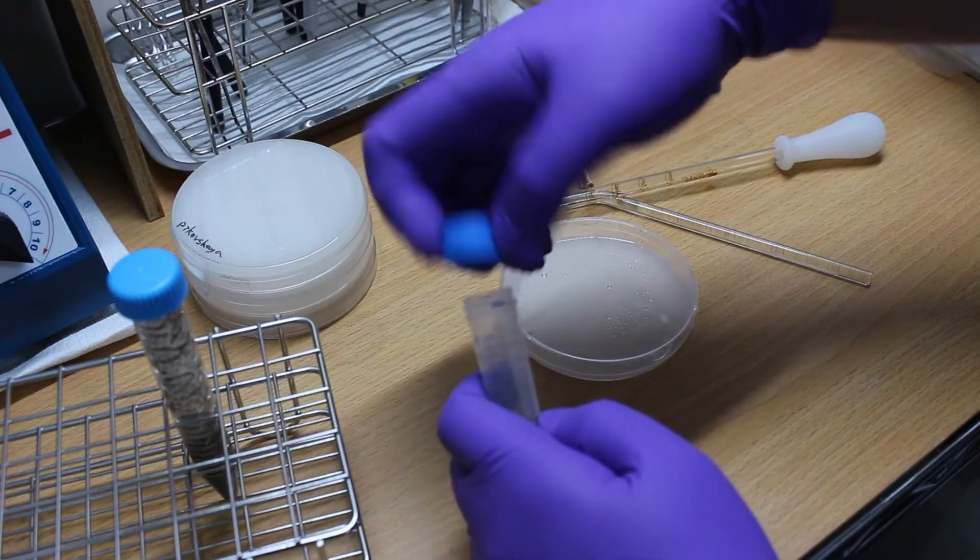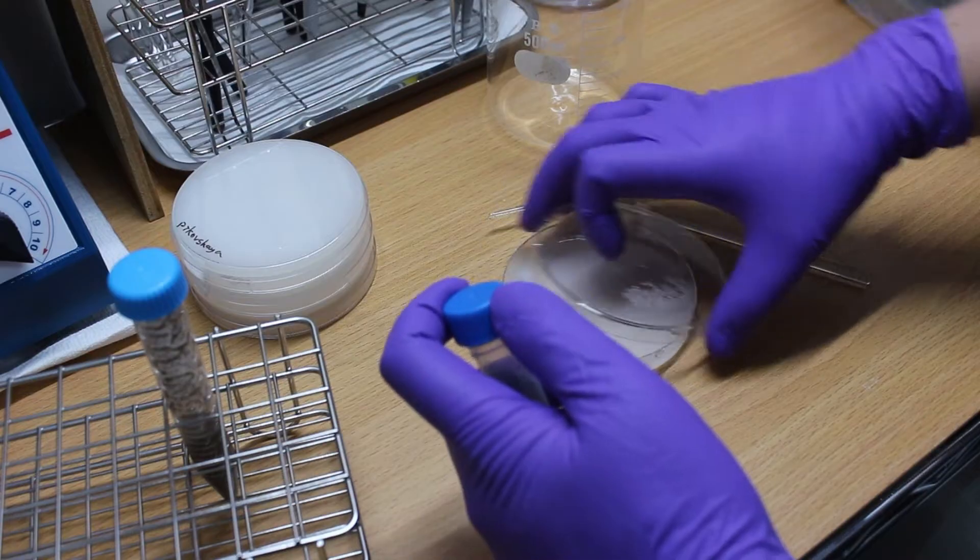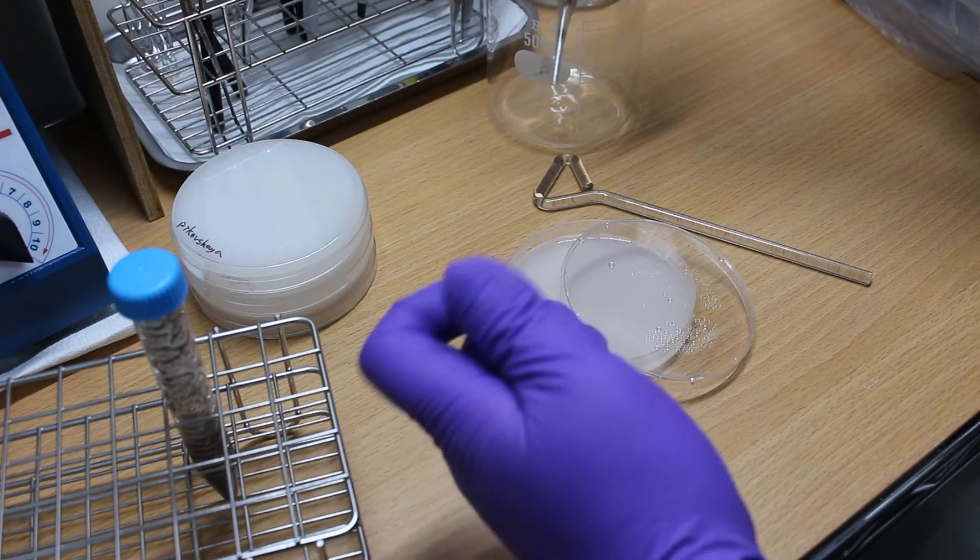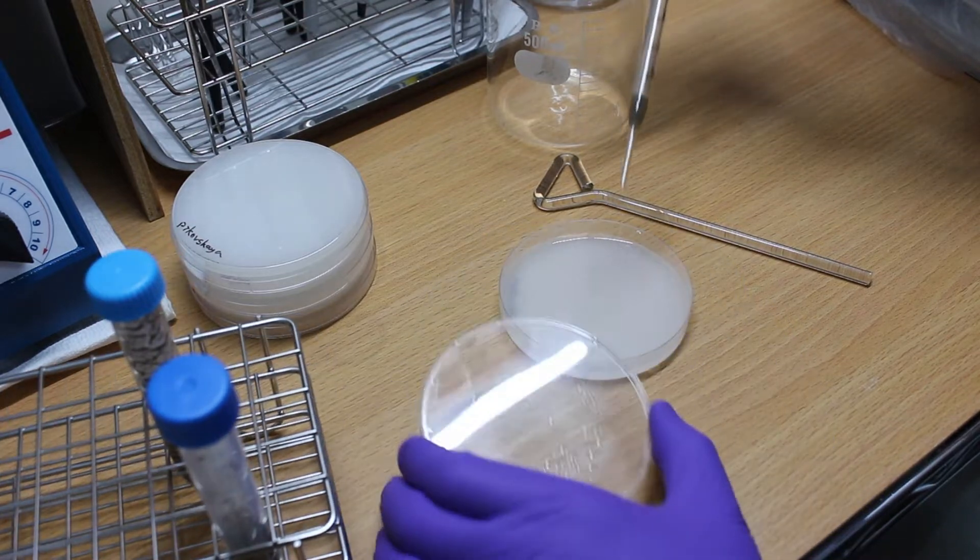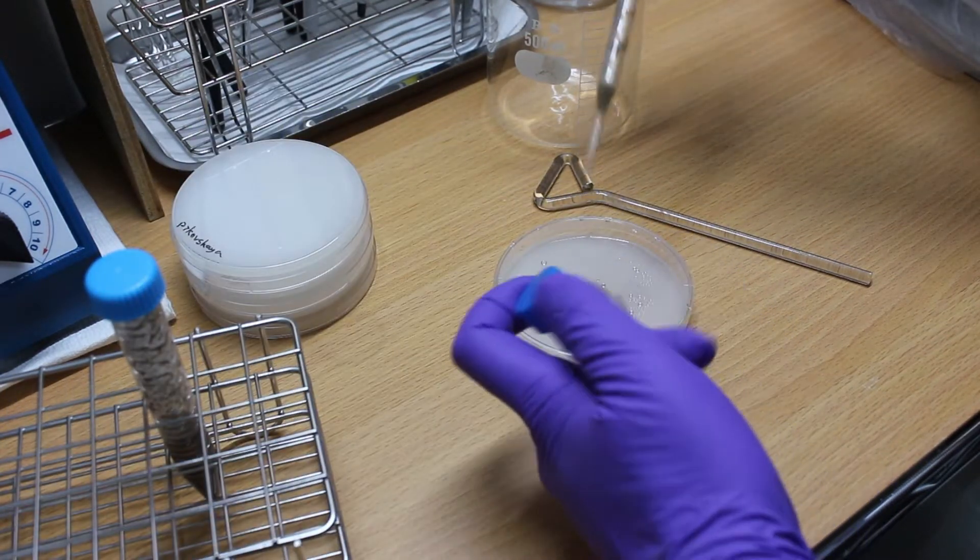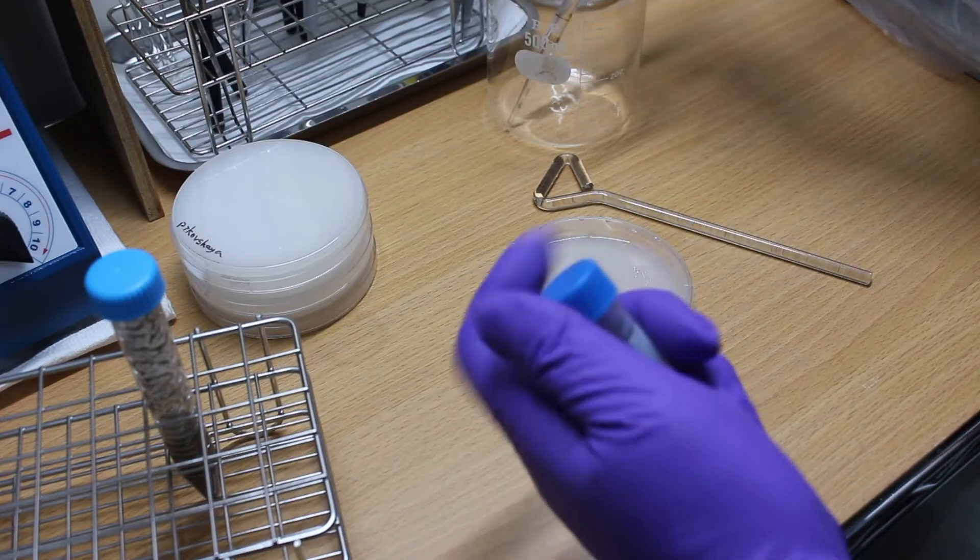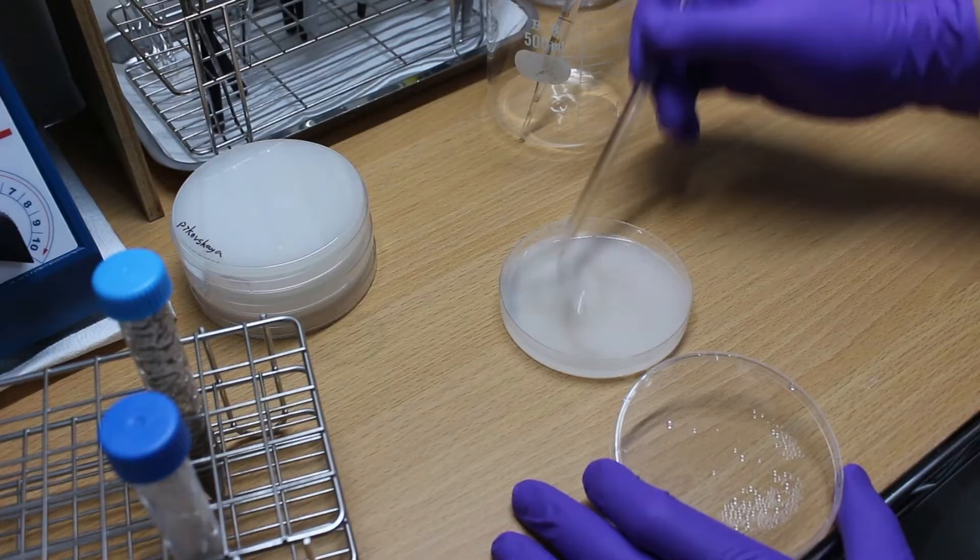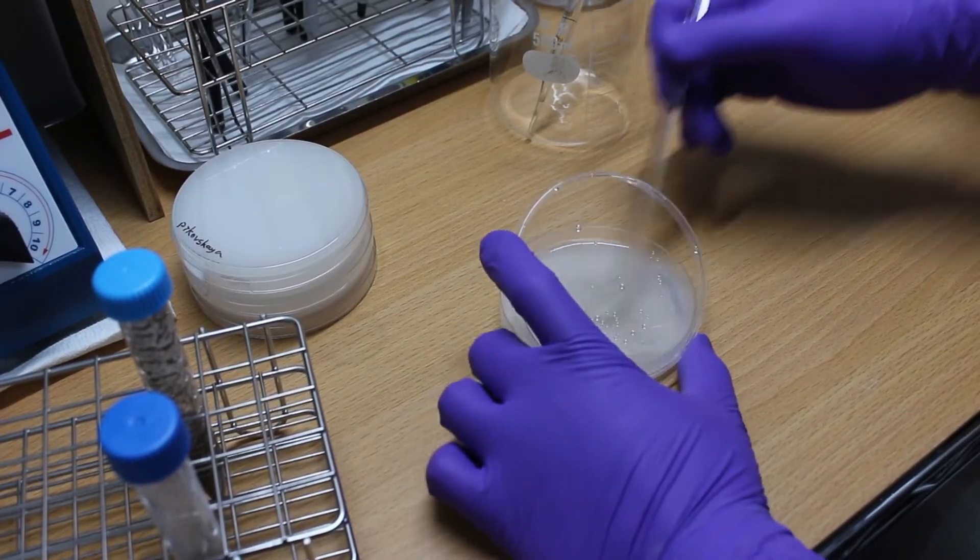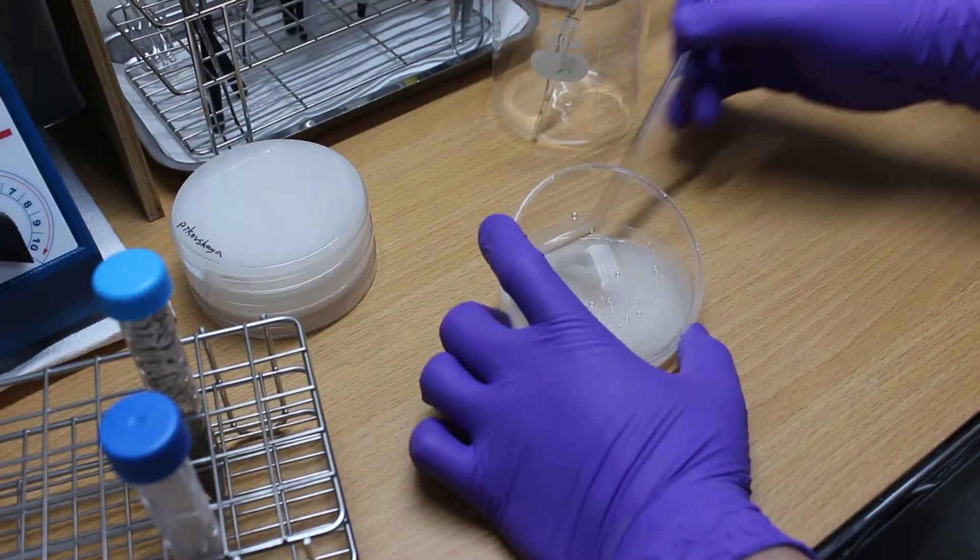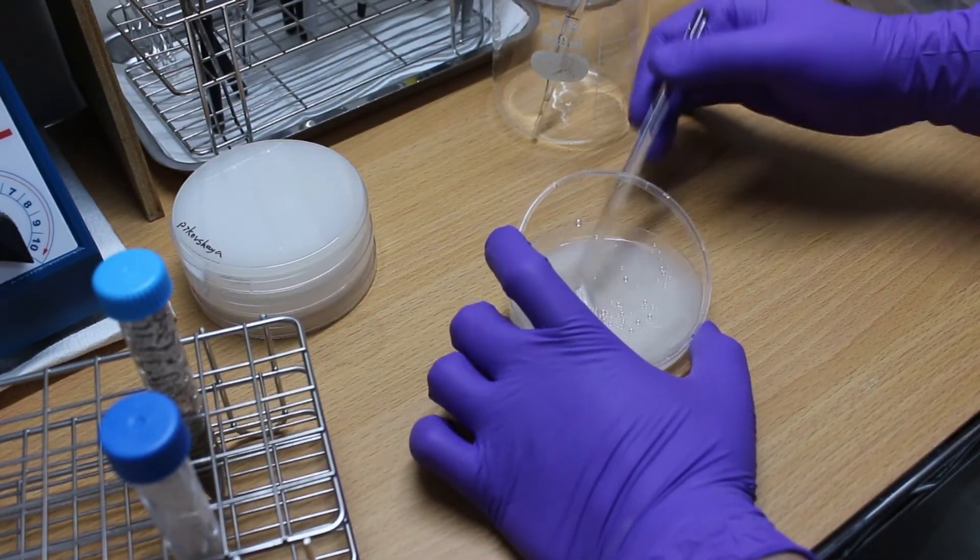Then use a dropper to drop the water onto the culture medium. About 1 to 2 drops is enough. After that, use a spreader to spread it evenly until dry. The agar plate I'm using here is Picoviskaya's agar, which is a culture medium for screening PSB. I already made a video on how to make this agar at home, so you can go check it out after you watch this video.